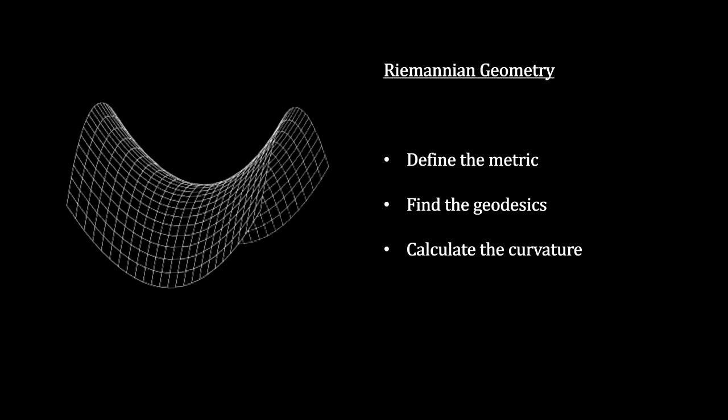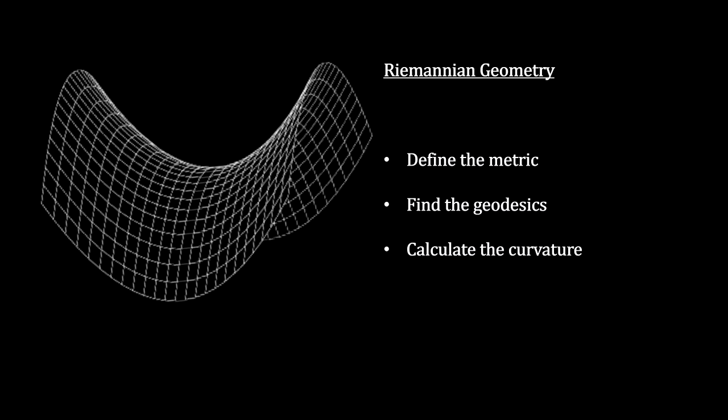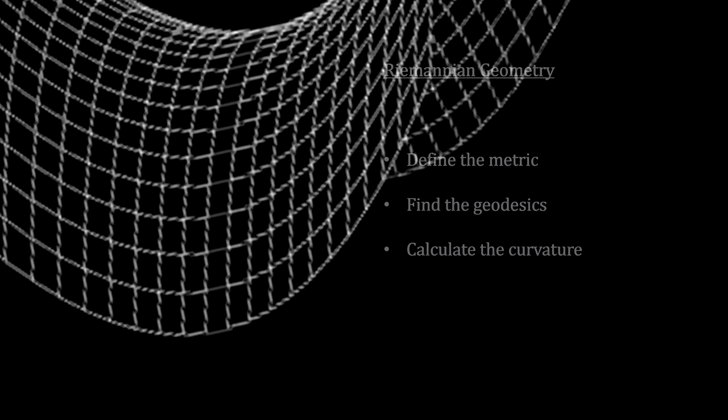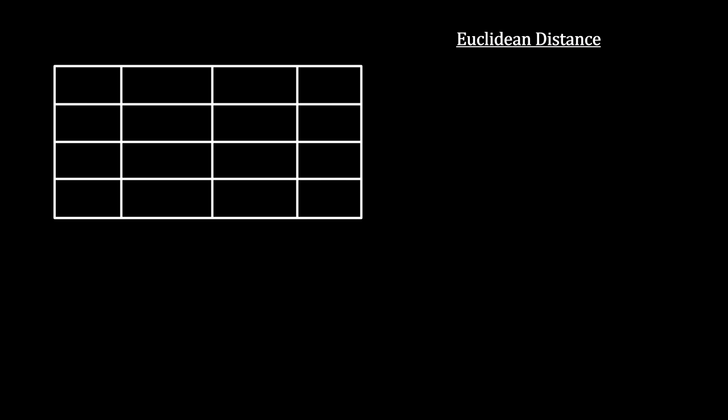These spaces are smooth. By that, I mean there are no abrupt changes. Given that, we can always zoom into a curved space to the point that the small piece we are looking at is flat. And in flat space, distance between any two points is defined by the Pythagorean theorem.